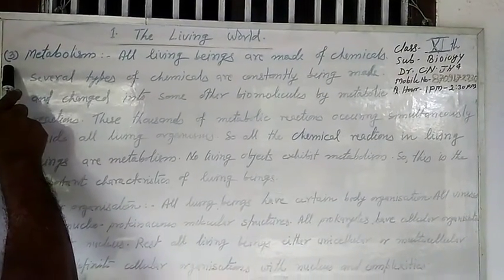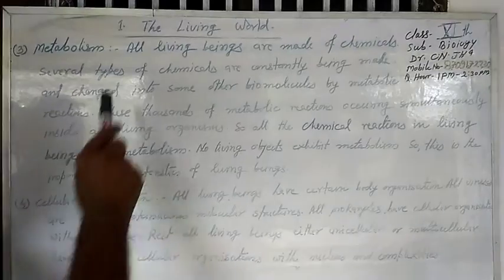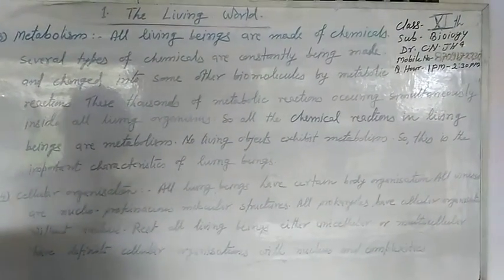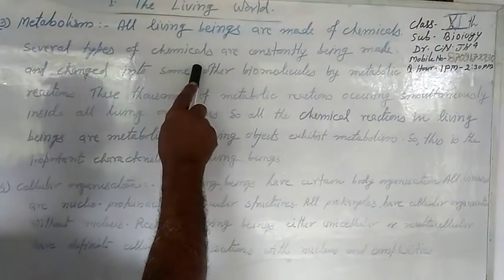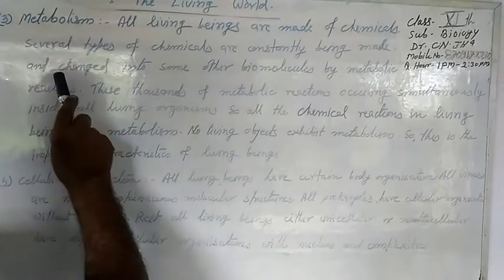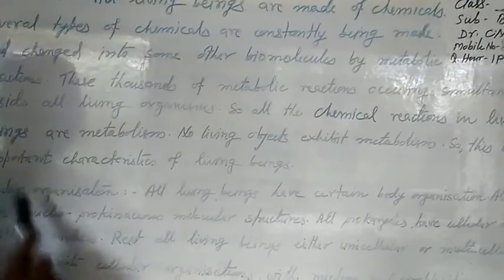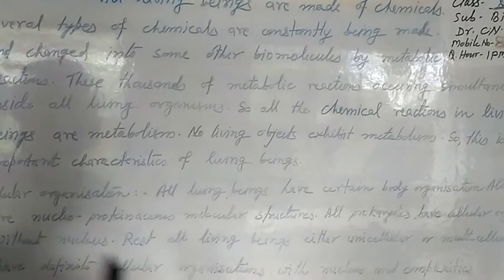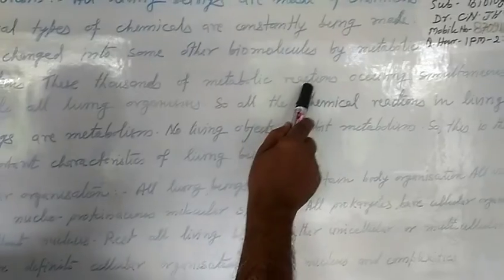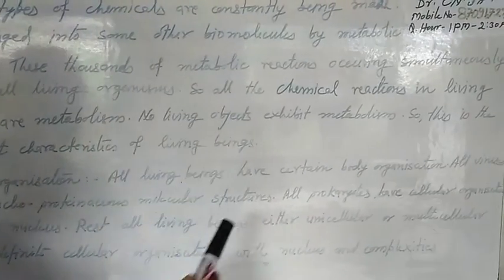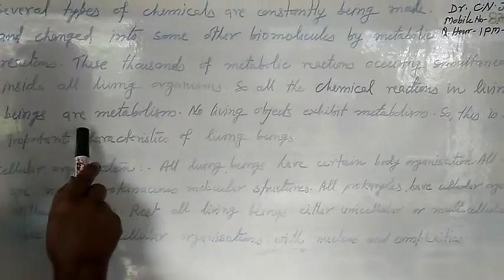Third is metabolism. All living beings are made of chemicals or chemical compounds. Several types of chemicals are constantly being made and changed into other biomolecules by metabolic reactions. For example, respiration, nutrition, and assimilation — all these are metabolic reactions. Thousands of metabolic reactions occur simultaneously inside all living organisms. So all the chemical reactions in living beings constitute metabolism.